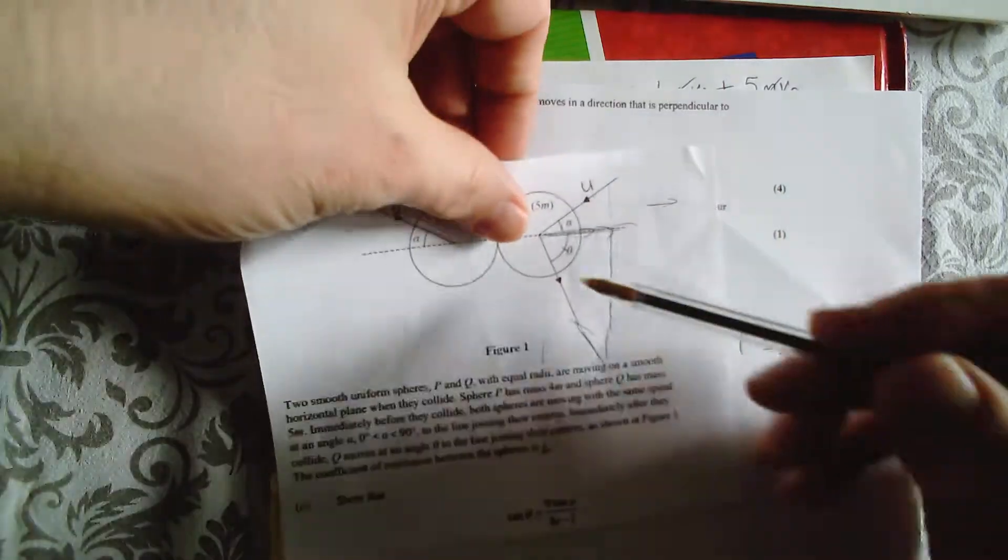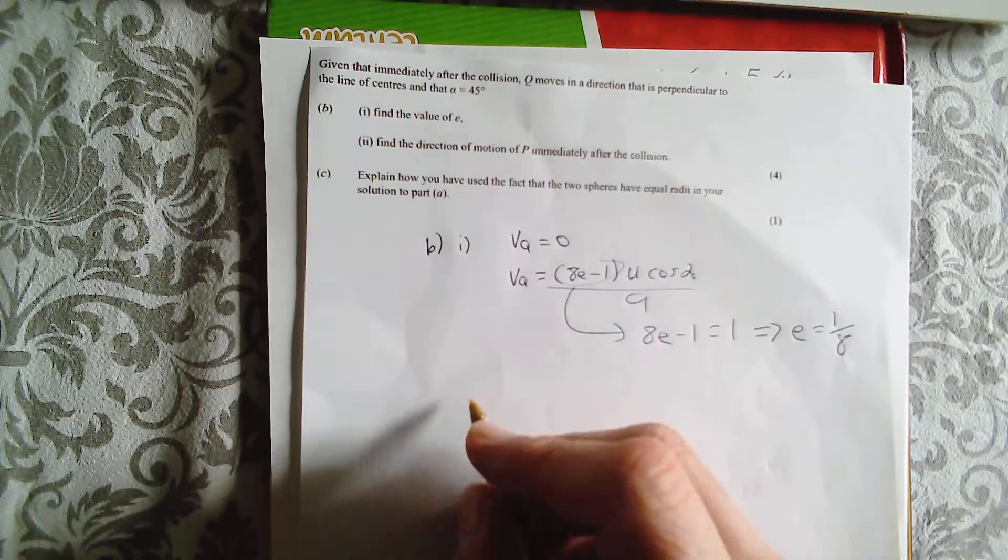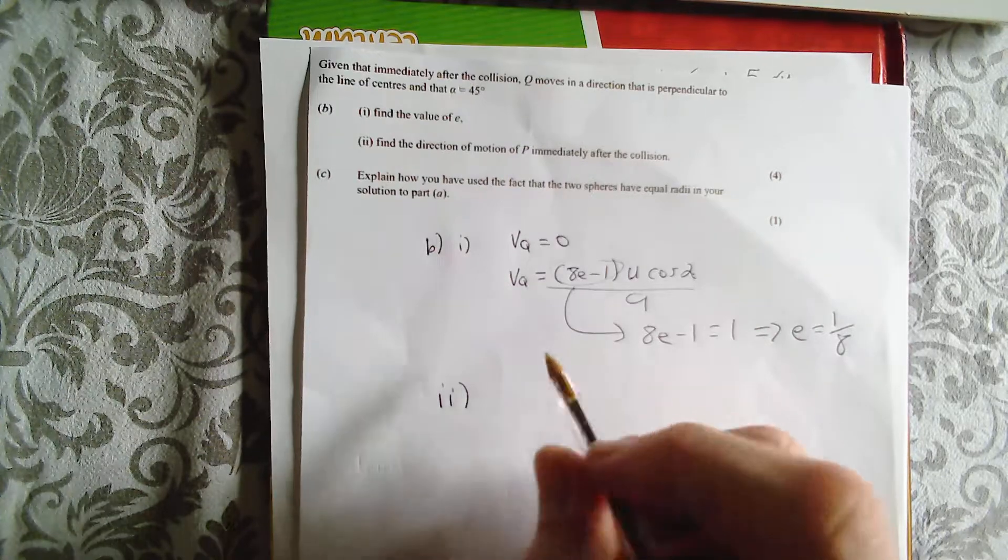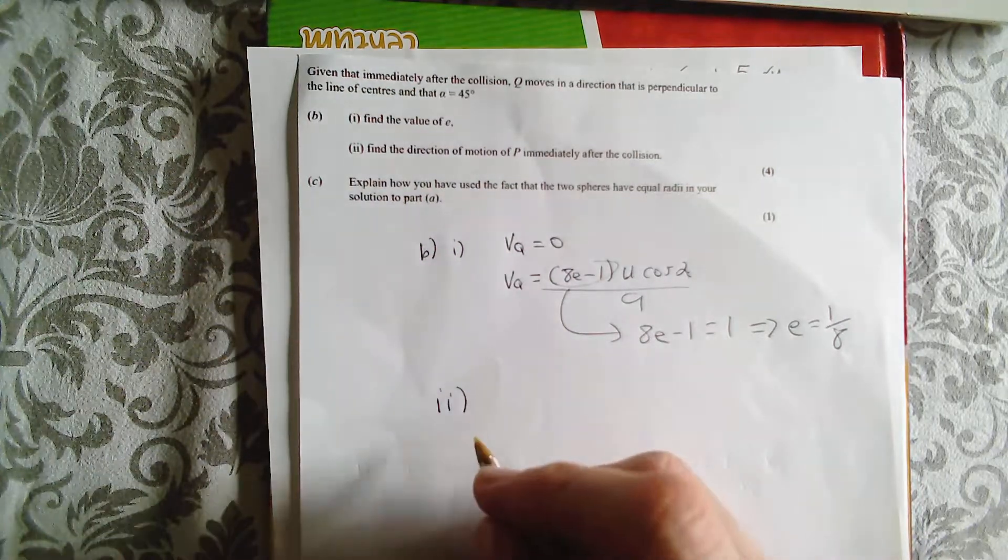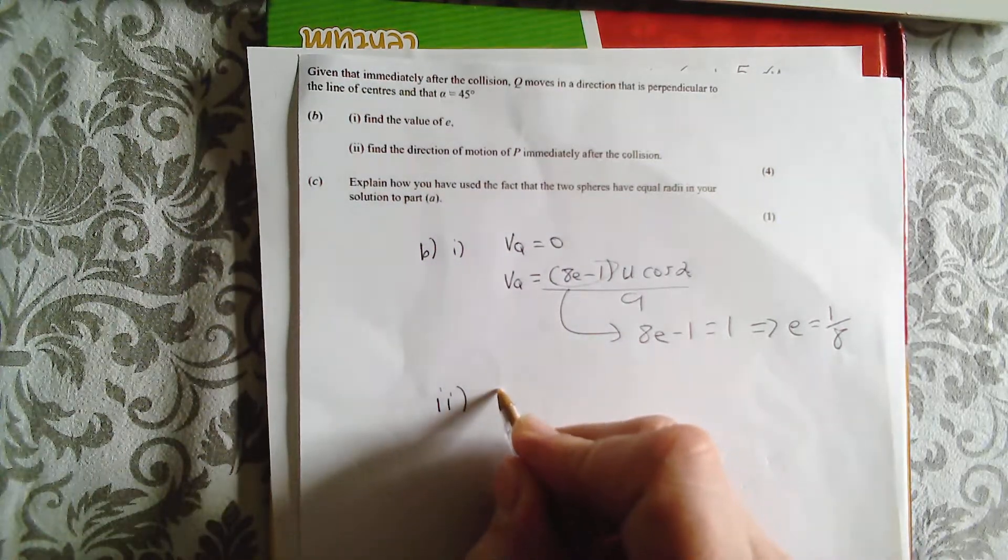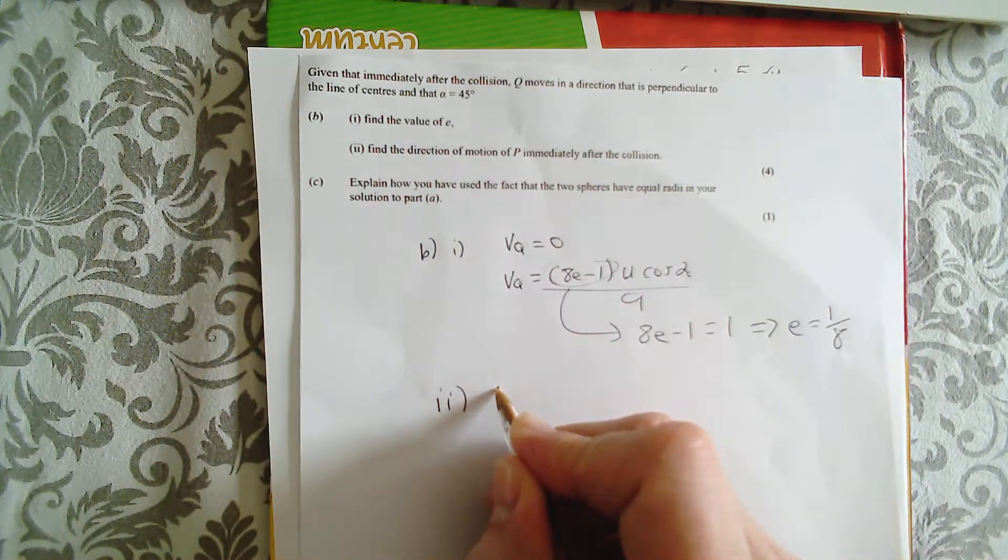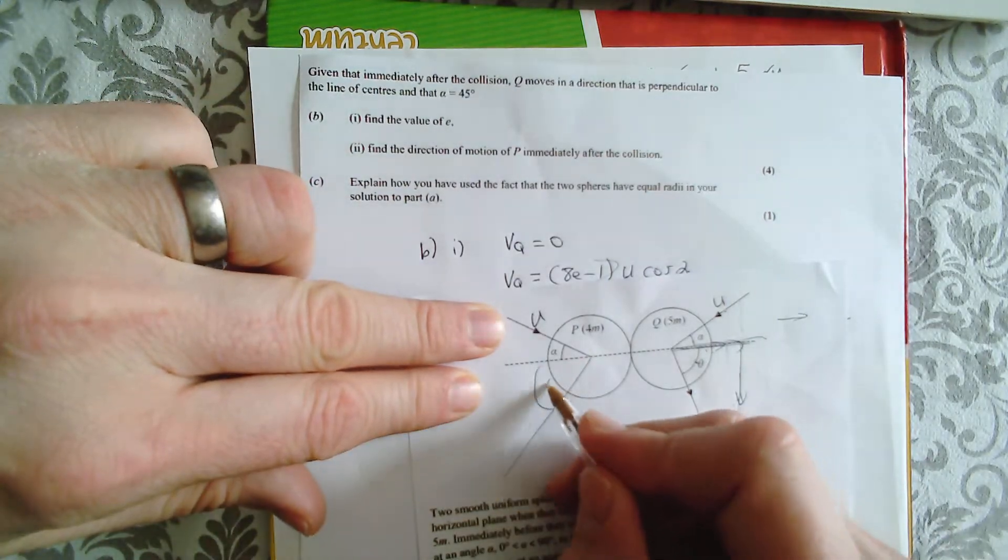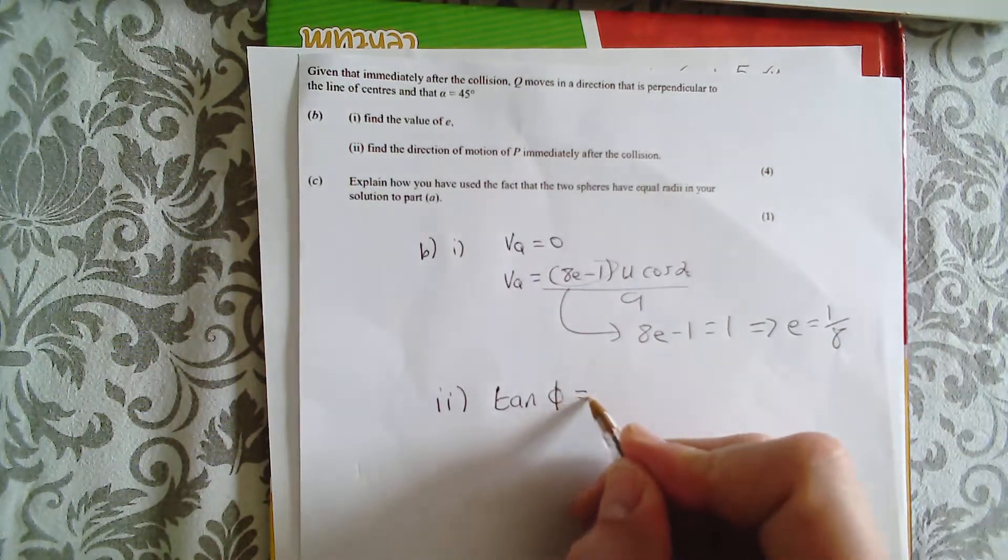So, that's all because we know that VQ is 0 because it moves perpendicular. It's not, it's going all that way and not at all that way. So, it's always nice to visualise in your mind what's going on. Now, part 2, find the direction of P immediately after. Well, direction of P, we think about this. Well, what's going on? The motion of P, so, well, tan, call it anything, call it phi there. Just think it's going to have some angle there. It doesn't matter what you call it, tan phi.